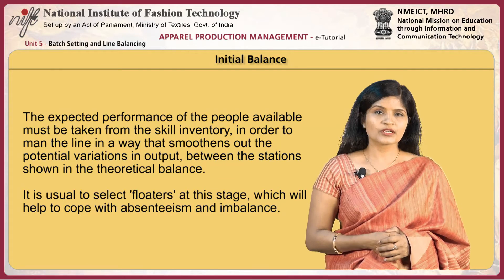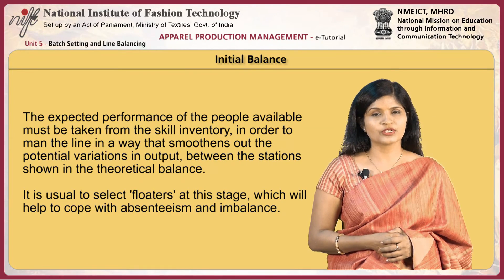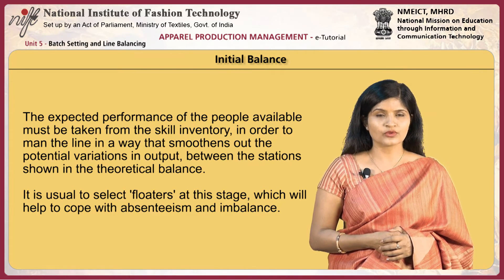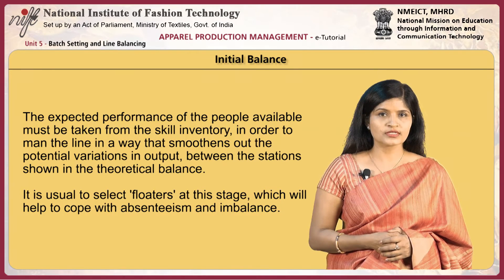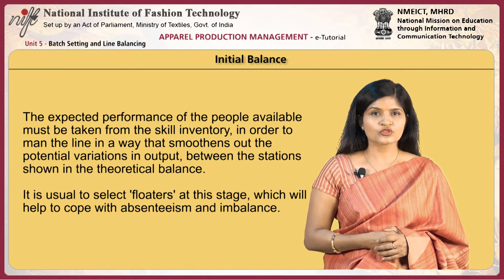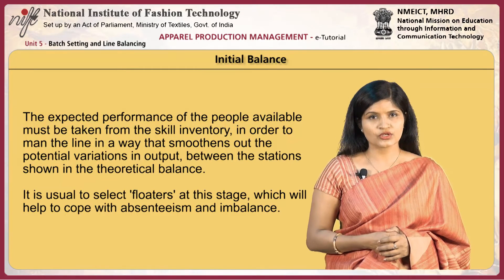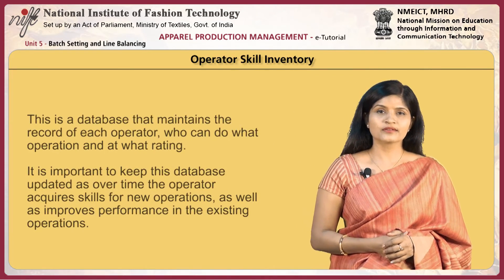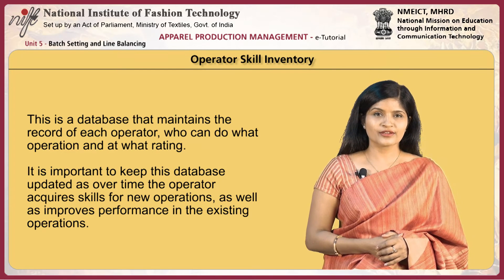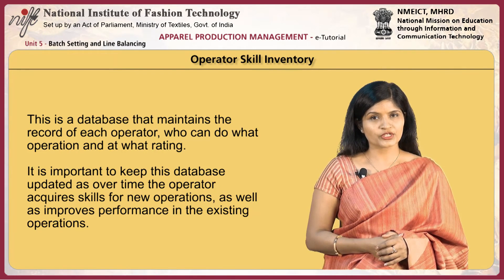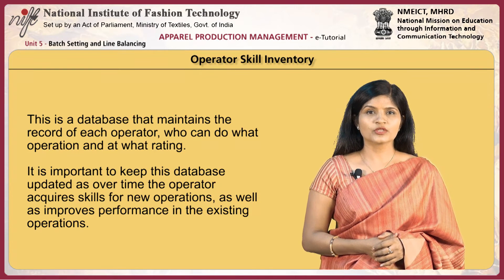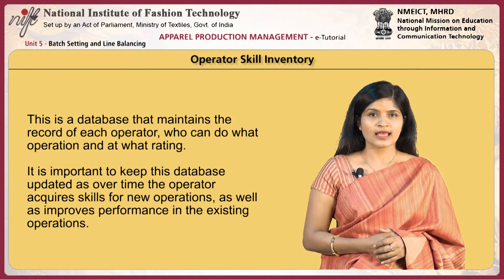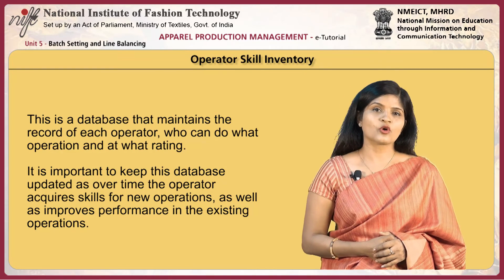Initial balance: the expected performance of the people available must be taken from the skill inventory in order to man the line in a way that smooths out potential variations in output between stations shown in the theoretical balance. Floaters are usually selected at this stage to help cope with absenteeism and imbalance. The operator skill inventory database maintains a record of each operator, what operations they can perform, and at what rating. It is important to keep this database updated as operators acquire skills for new operations and improve performance in existing ones.